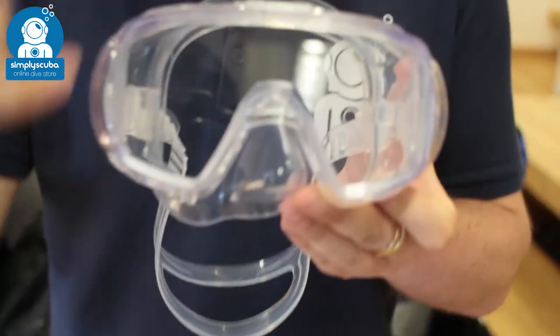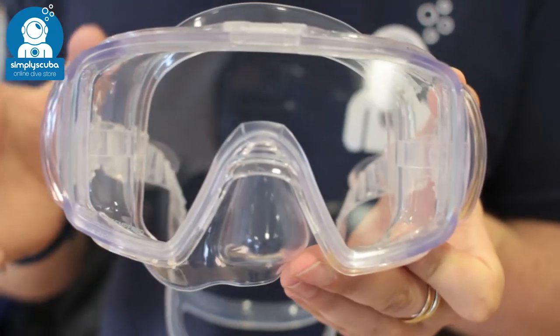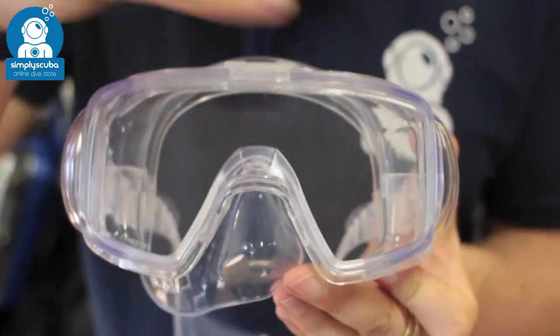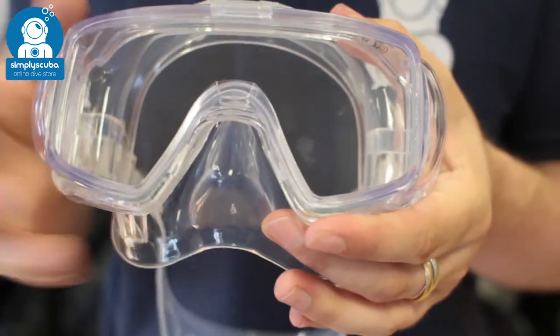This mask is special because it has side bubble windows, so you have very wide peripheral vision. You've got a single lens which lets so much light in, giving you a huge field of vision.